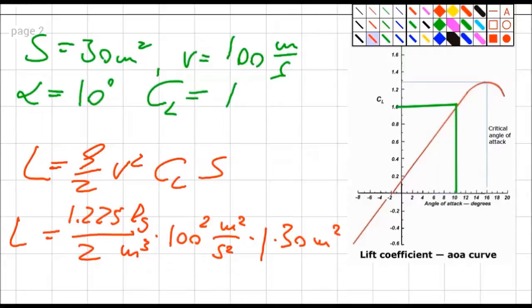This is 100 to the power of 2 meter square over second square times 1 for C_L times 30 square meters. I quickly look into my units of measurements. I have meter to the power of 4 in the top and in the bottom meter to the power of 3. So I can cancel out this one, I can cancel out this one meter.